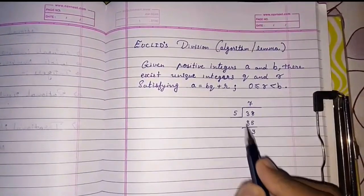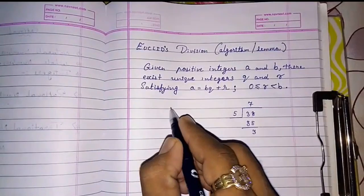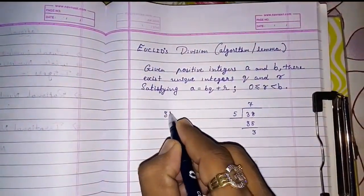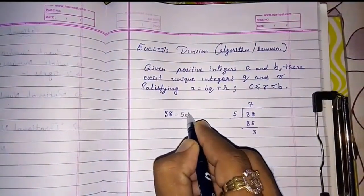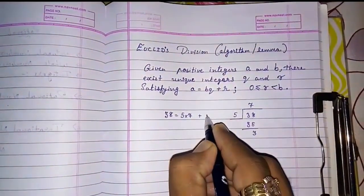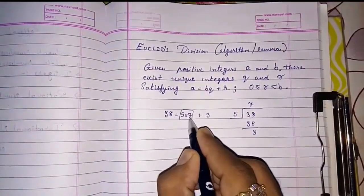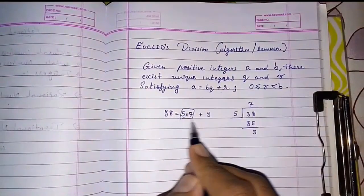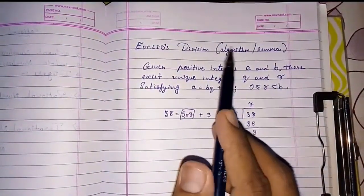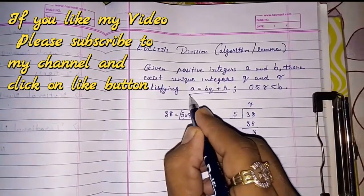So if I want to write this in the form of a is equal to bq plus r, I can write 38 is equal to 5 into 7 plus 3. You can see this: 5, 7, 35 plus 3, 38. So this is the relation. This is Euclid's division algorithm. They had given a name to this.